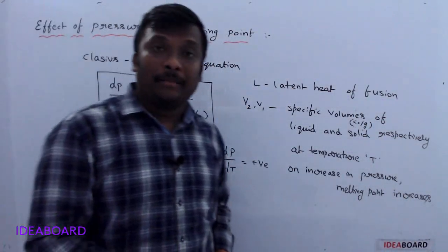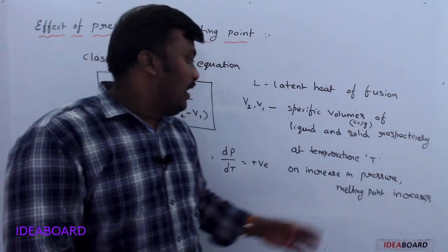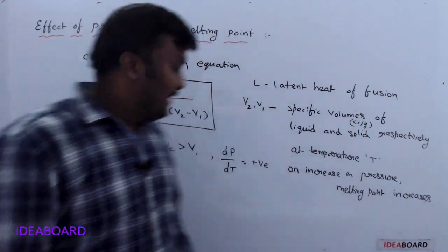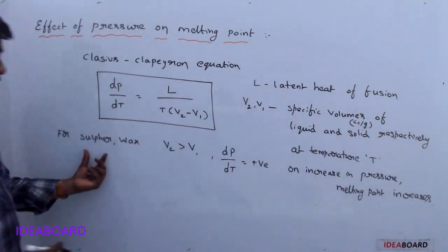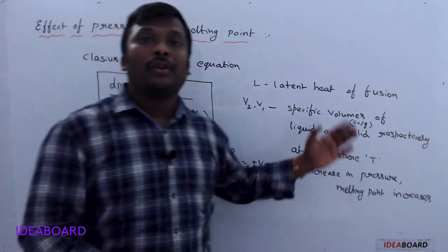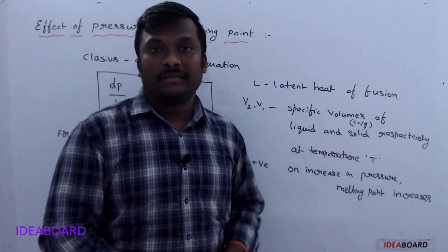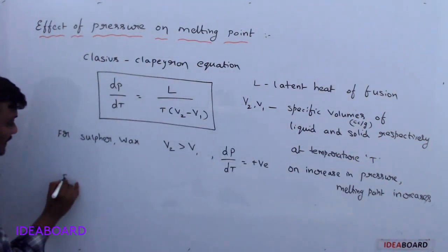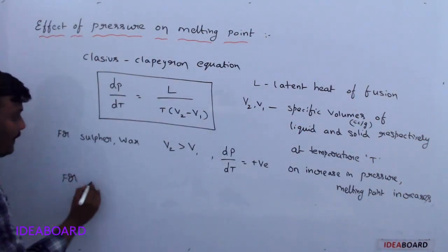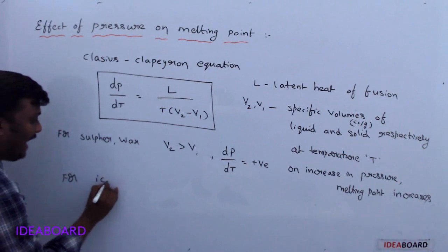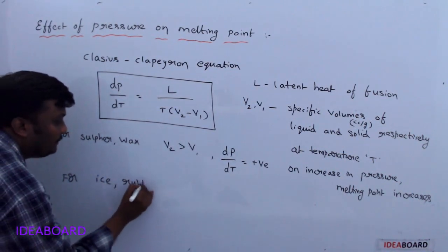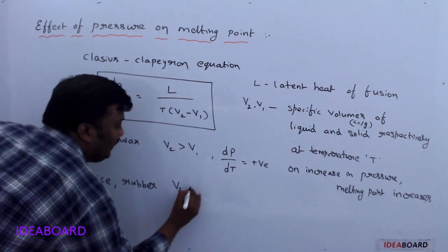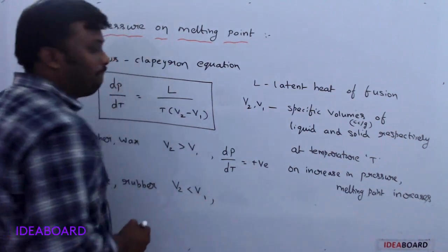dP/dT positive means on increase in pressure, melting point of substances like sulfur and wax also increases. Now, for substances like ice and rubber, V2 is less than V1.